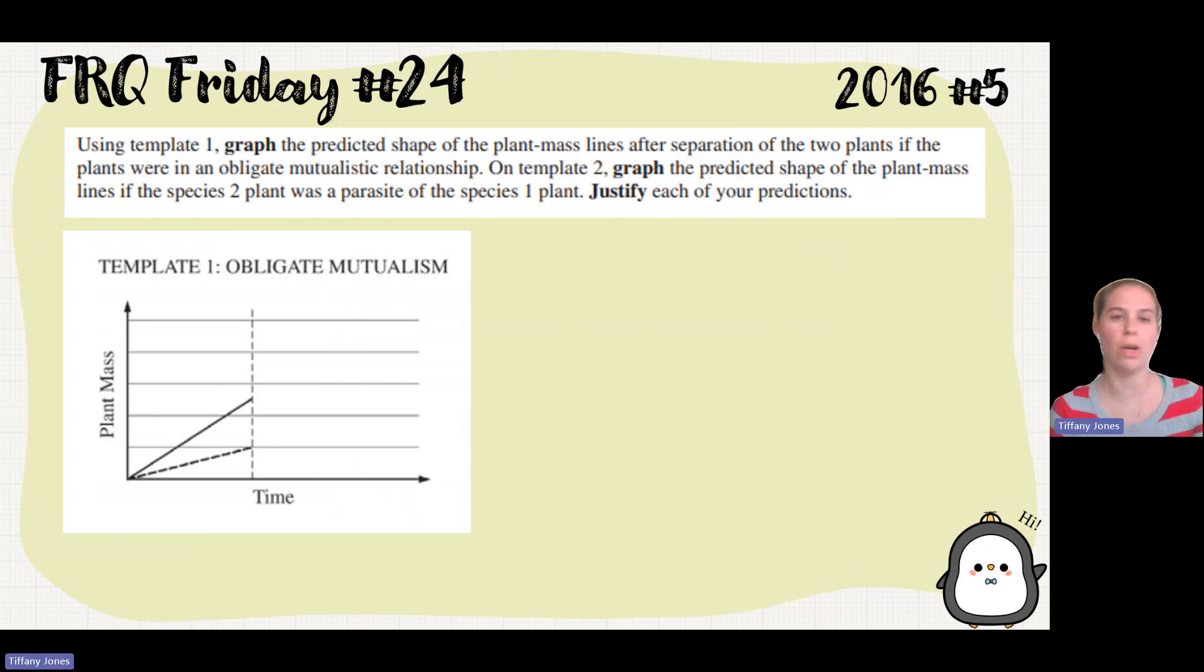And so if you were to separate these two organisms, say a termite and the protozoa that lives in their intestines, if you were to separate those two organisms from each other, then they're not going to be able to survive without the other. So we would expect both lines to decrease.